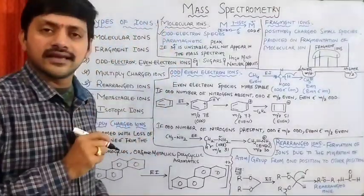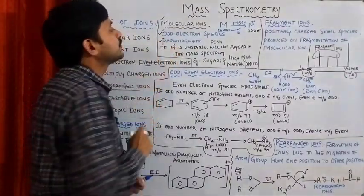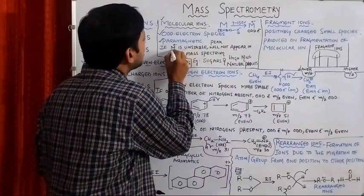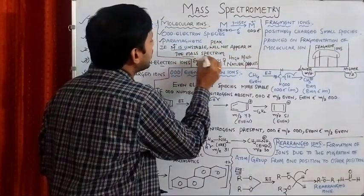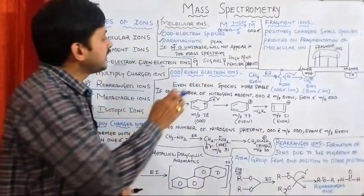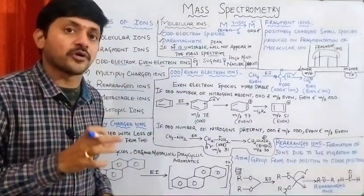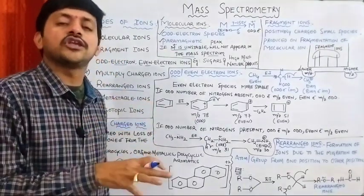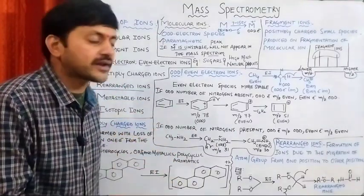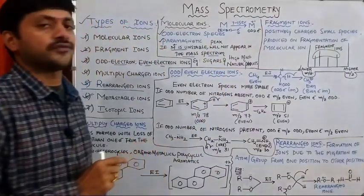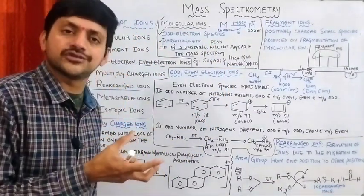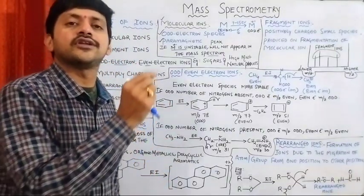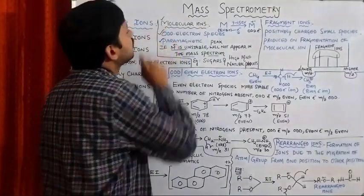Whenever we have radical character, we can say that the nature of the ion is going to be paramagnetic. If the molecular ion is unstable, the peak will not appear in the mass spectrum — this is very important in case of sugars and high molecular weight natural products, where formed molecular ions are highly unstable. The M/Z value of the molecular ion is always equal to the molecular weight of the unknown sample.